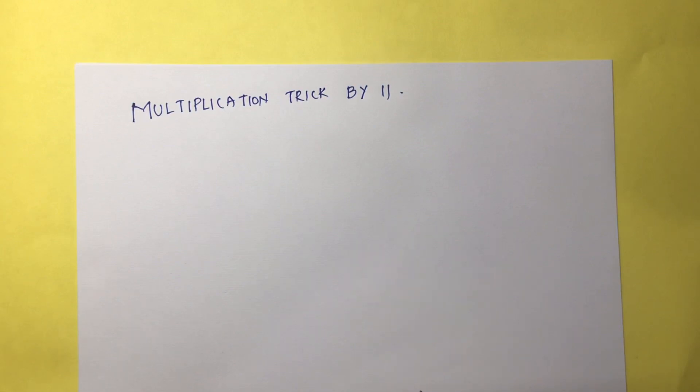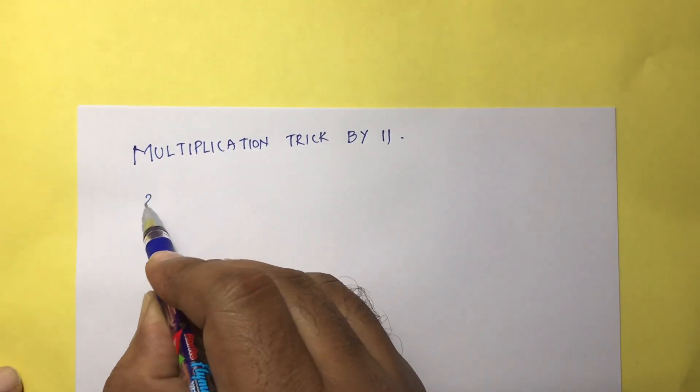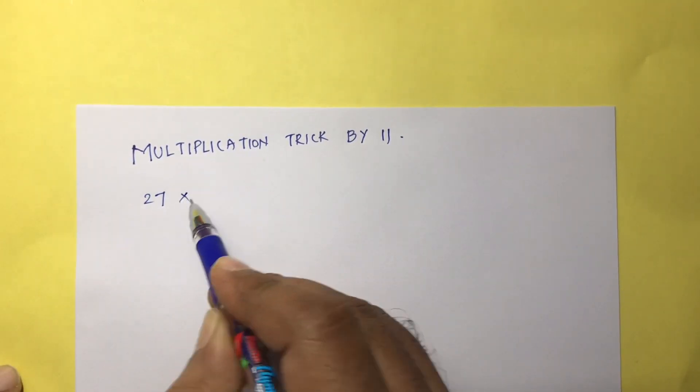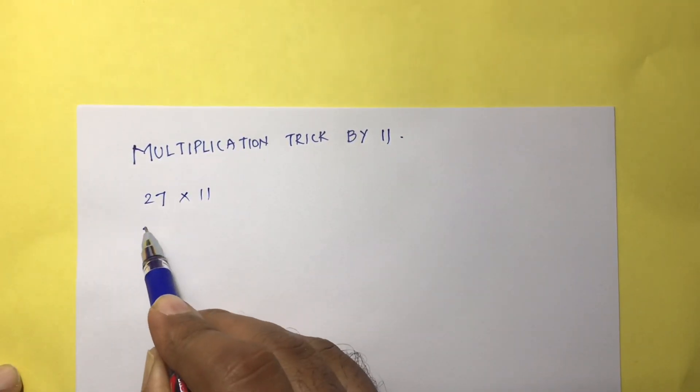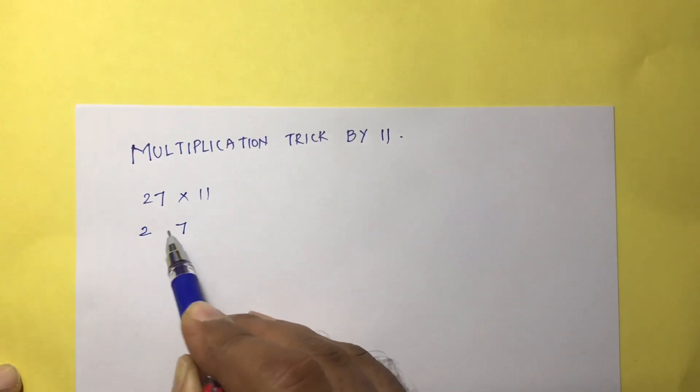Multiplication trick by 11. Now, example: 27 into 11. So here, write 2, here leave some gap, and write 7.